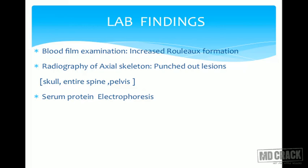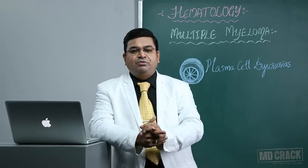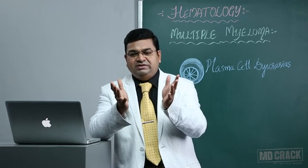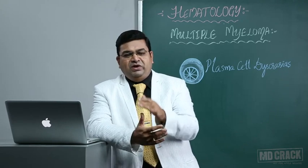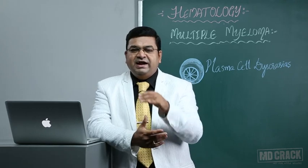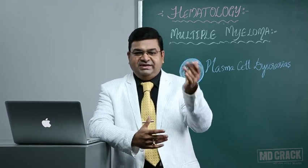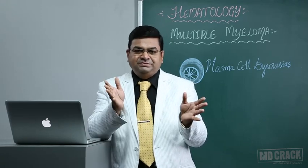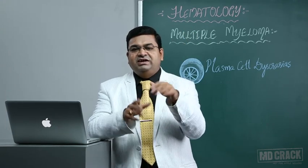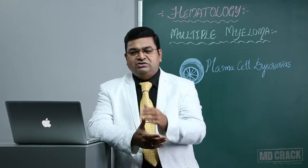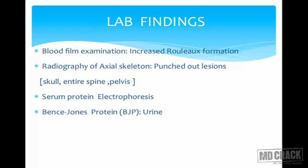An important laboratory test is serum protein electrophoresis to look for abnormal protein levels. In urine, we do a very peculiar test called Bence Jones proteinuria. When you heat urine containing these proteins to 60-65 degrees centigrade, the Bence Jones proteins appear as turbidity. If you heat further, the turbidity disappears; when brought back to 60-65 degrees, they reappear. These patients also show high ESR levels, mainly because of increased immunoglobulin levels.